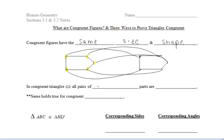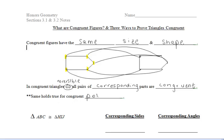Now in congruent triangles, all pairs of corresponding parts are congruent. The word 'corresponding' will appear a lot this semester, and we'll talk about what that means in just a moment. Now let's also look at the symbol there — that symbol means that the statement is reversible. So we can take the converse of it and it would still be true. So if we have two triangles in which all pairs of corresponding parts are congruent, then the triangles are congruent themselves. And the same holds true for polygons, as we can see in the figures above where we were working with pentagons.